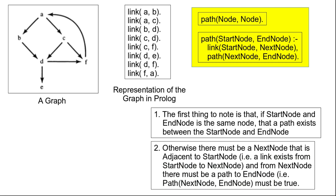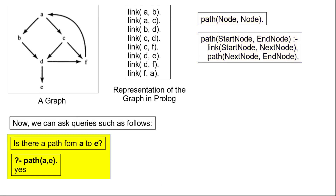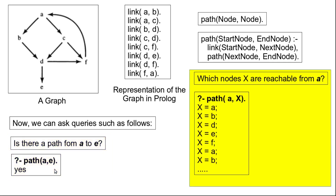Once we have this program we can run different types of queries. We can ask: is there a path from a to e? The Prolog query would be path(a, e) and it returns yes. We can also ask which nodes X are reachable from a — the query for that would be path(a, X).